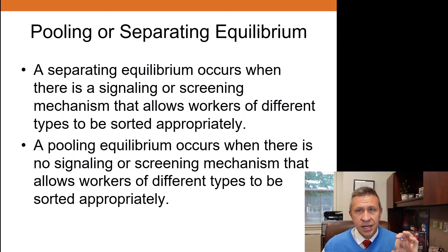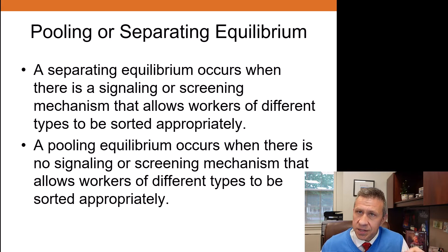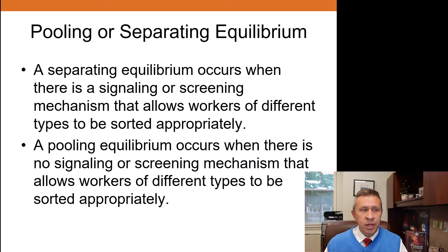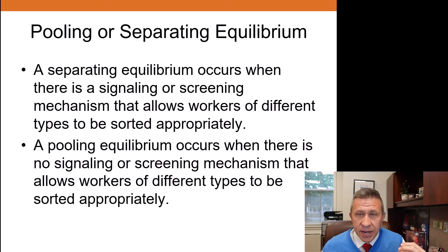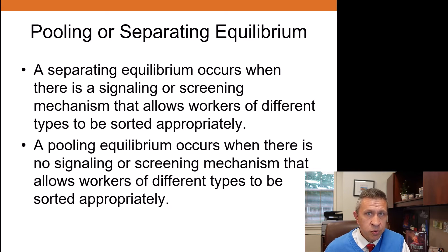This is an example of a separating equilibrium — an equilibrium where the signaling mechanism can properly sort between different types of workers. When a screen or signal can properly sort individuals into their true groups, that leads to a separating equilibrium. A pooling equilibrium is the case where an effective signal is not possible — perhaps the time and effort to obtain a particular signal is about the same for those in different groups, making it impossible to sort between the two.